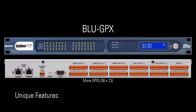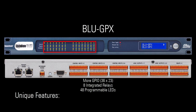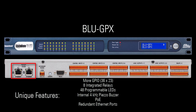The Blue GPX also uniquely offers eight integrated relays which can be told to physically move to open or close a circuit, 48 programmable tri-color red-green-yellow front panel LEDs, and a 4 kHz piezo buzzer for audible indications. The Blue GPX is configured, controlled, and monitored, and also optionally powered via PoE through either of the two Ethernet ports. There's also a 12 volt DC connector for backup power.